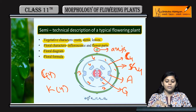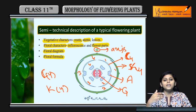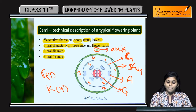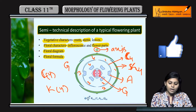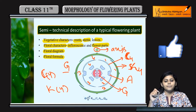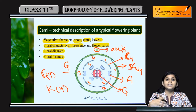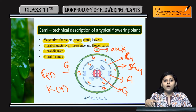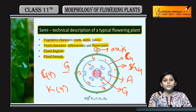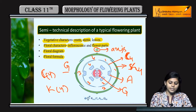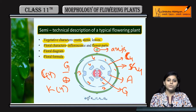Gynoecium mein ek aur cheez hoti hai - that is superior ya inferior ovary. Agar ovary superior ho, toh G ko underline karke likhenge. Hum dekhenge ki jo flower hai woh actinomorphic hai, means agar use cut karenge toh equal halves mein cut hoga, kisi bhi axis se cut karo. Actinomorphic ke liye yeh symbol use hota hai.